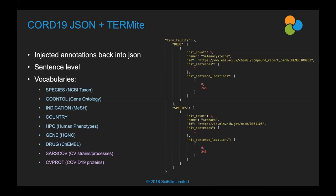Once we had these annotations, they were injected back into the JSON. There's a block of Termite hits under the title, a block under the abstract, and a block under the body text. We've had some hundreds of downloads of this now, so people are using it and it's getting some traction.